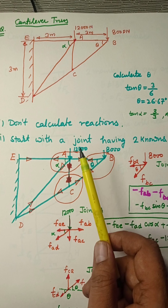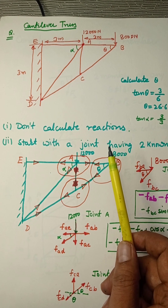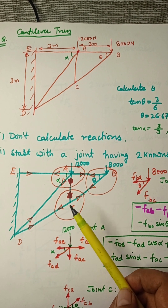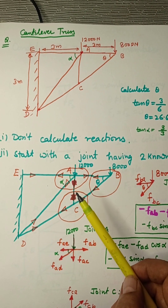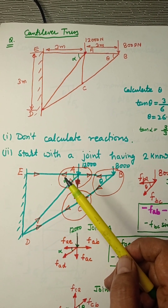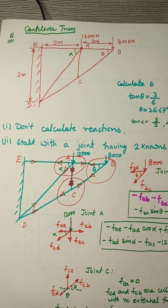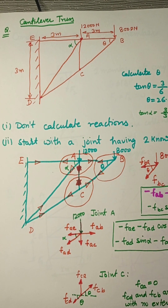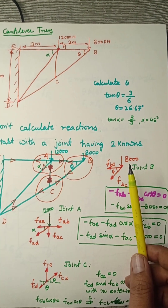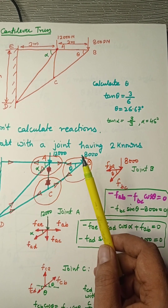Now let us proceed to make free body diagrams of all the joints. We assume the arrowhead away from the joint for all members, meaning tensile force. We have assumed all members of the truss are under tensile force; if we get a negative sign, that means it is not tensile but compressive.